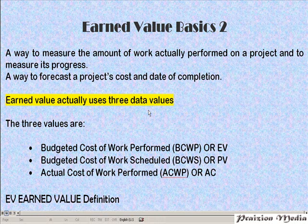Earned Value is a way that you can measure the work performed and also measure the progress in the project. It will enable you to forecast the project's cost, the estimate to complete or the estimate at completion, or the budget at completion, and the date of completion. Because if you know the time period — how long it will take to complete the work — you'll be able to predict the date based on the calendar or the schedule that you're using.